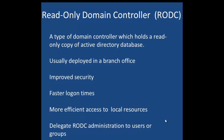Another reason is faster logon times. Sometimes branch offices have poor network bandwidth connectivity with the head office where the writable domain controller exists. So you might want to deploy a read-only domain controller to the branch office so that branch office users need not authenticate themselves from the writable DC over the WAN link. When users authenticate from the read-only domain controller at the branch office, this reduces the amount of time required to log on.